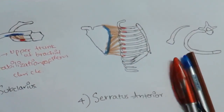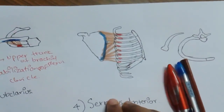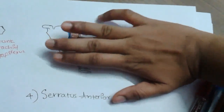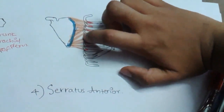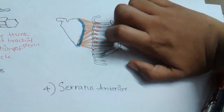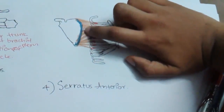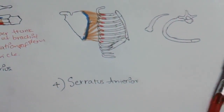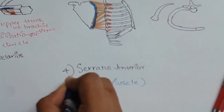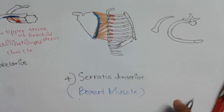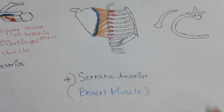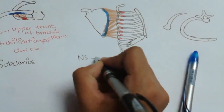The action of serratus anterior: since it is attached to the scapula, when it contracts it produces protraction of the scapula — moving the scapula forward during pushing and punching movements. Because of this it is called the boxer's muscle. The nerve supply is the long thoracic nerve.